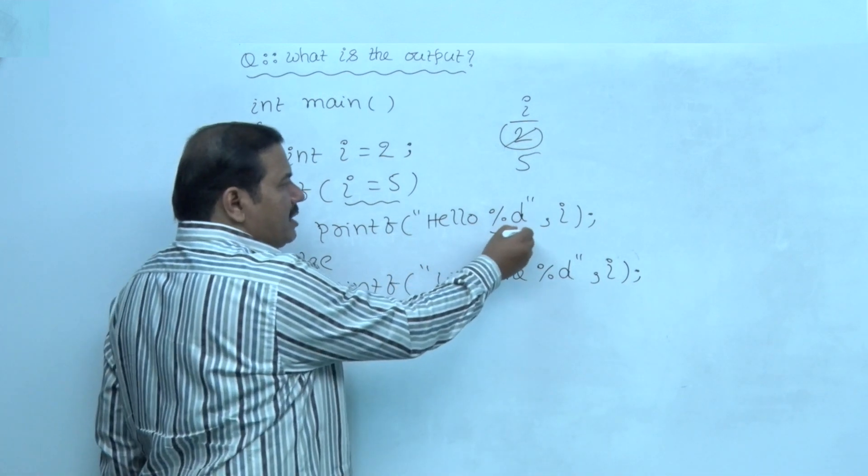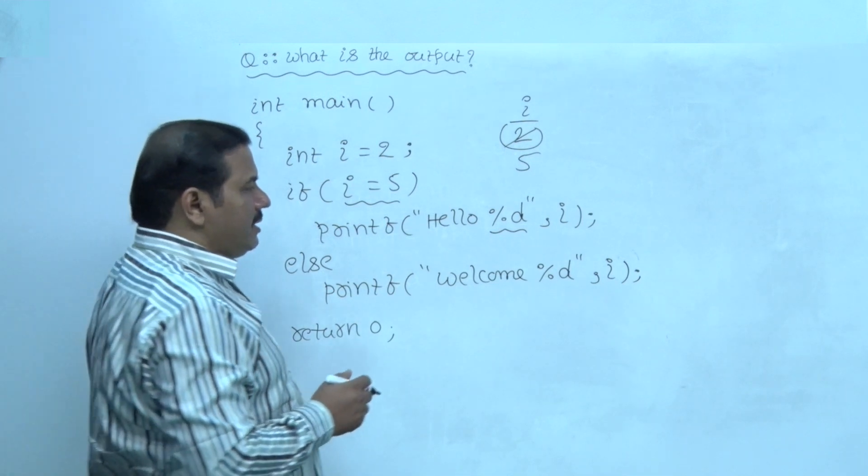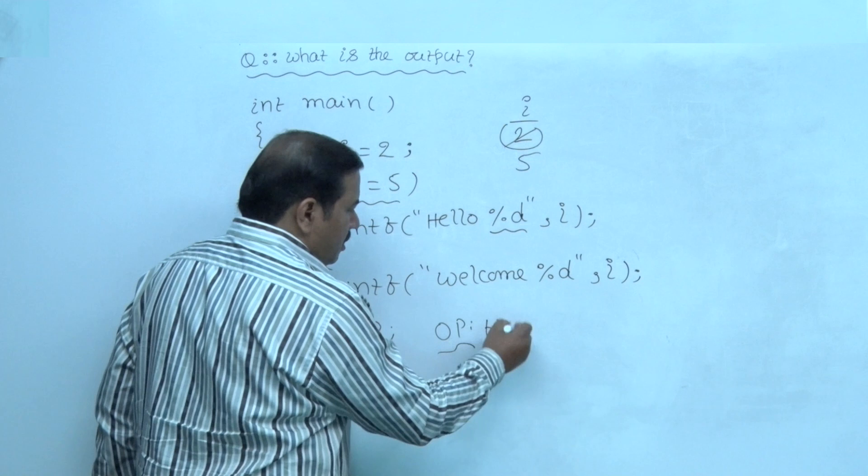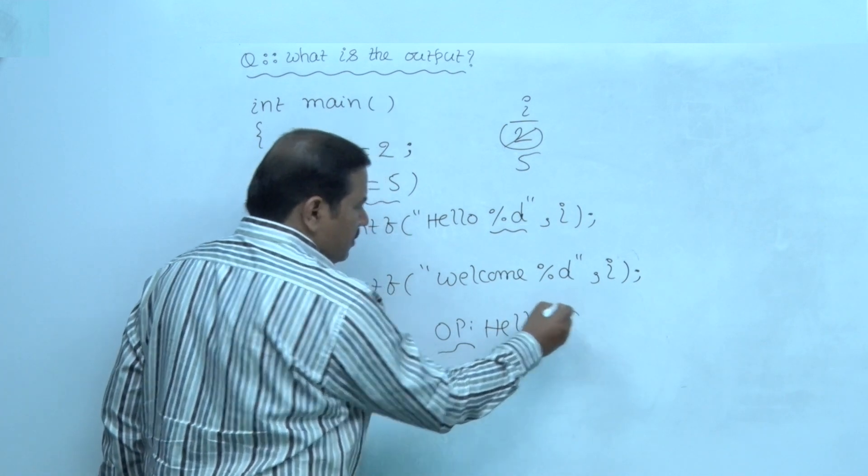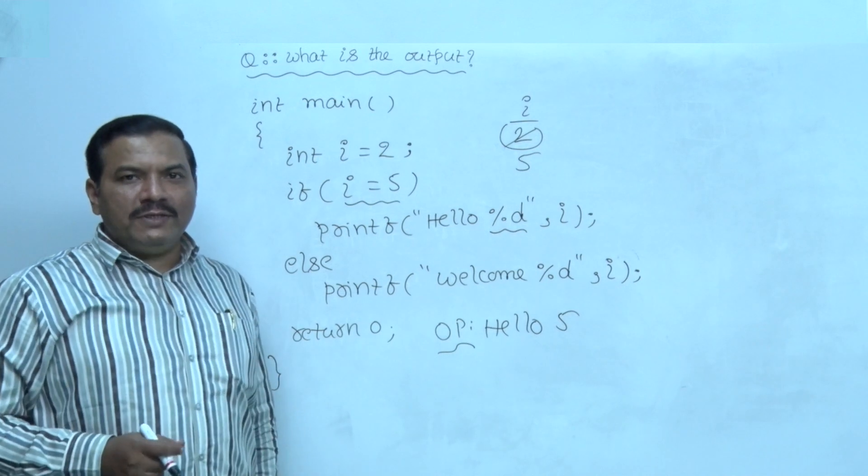In place of this format specifier percent d, i value 5 is printed. Hence, the final output of this code is hello 5 is printed. This is the final result of this code.